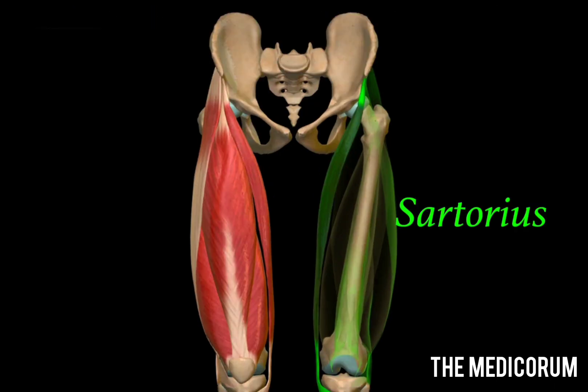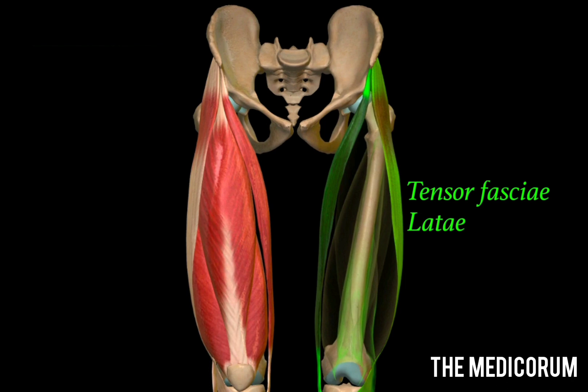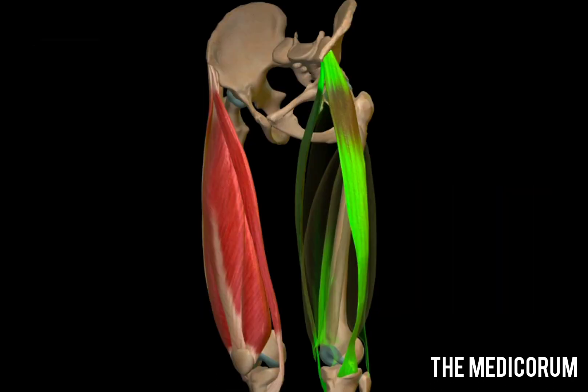The first muscle of the anterior compartment of the thigh is the sartorius. It originates laterally and inserts on the medial side of the thigh, making it the only muscle in the thigh that crosses from lateral to medial. The second muscle is the tensor fascia lata, which is sometimes also considered a muscle of the gluteal region. Basically, tensor fascia lata is the extension of fascia over the anterior compartment of the thigh and is situated laterally.